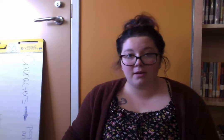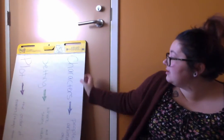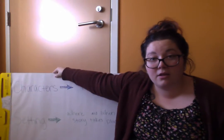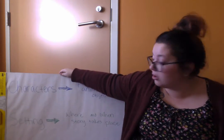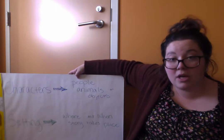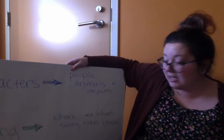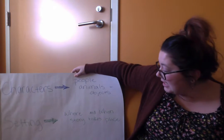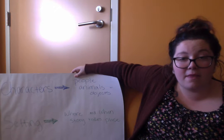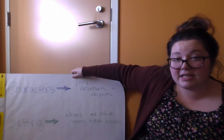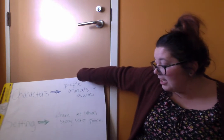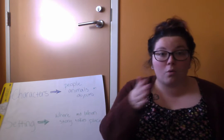So that's the end of the story. I want you guys to focus on three things from what we read. The first thing is going to be the characters. The characters are the people, animals, or objects in our story. Then we're going to also focus on the setting — where and when the story takes place. The last thing you're going to focus on is the plot. The plot of our story is going to be the order of events, or the things that happen in our story.